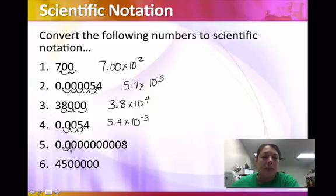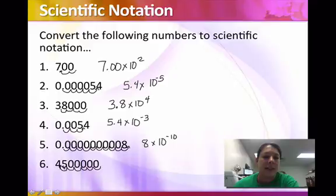And then here, 1, 2, 3, 4, 5, 6, 7, 8, 9, 10. So 8 times 10 to the negative 10th. And on this last one, 1, 2, 3, 4, 5, 6. This would be 4.5 times 10 to the 6th. And that's positive 6 because this number is bigger than 1.